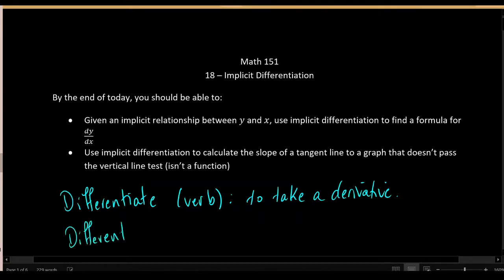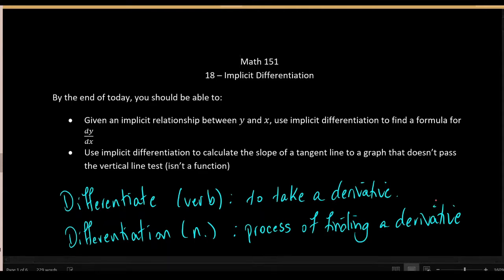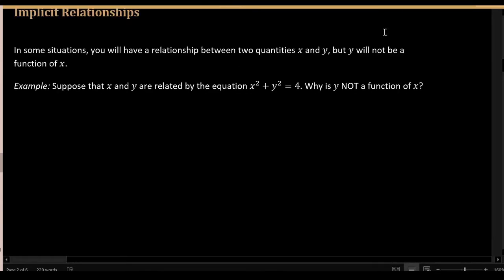Differentiation is just the noun version of this word — it is the process of finding a derivative. Implicit differentiation is the process of finding a derivative for an implicit relationship, such as the one given here.